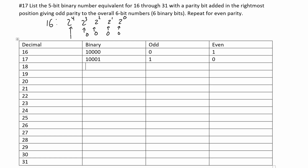For 18, we are going to have 1 0 0 1 0, because of the 2 to the 1st position, and that makes it 18. We can see that again we have an even number of ones, so we're going to have a 1 for odd parity and a 0 for our even parity.